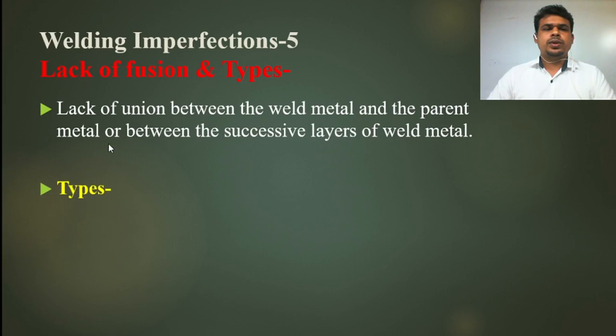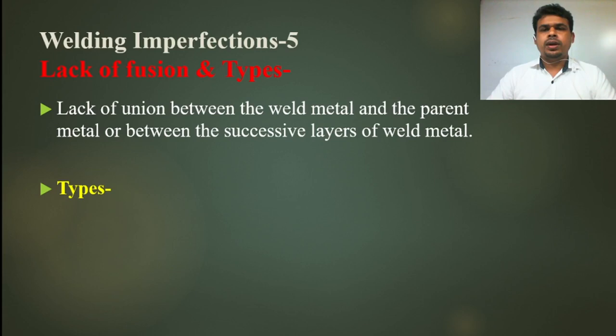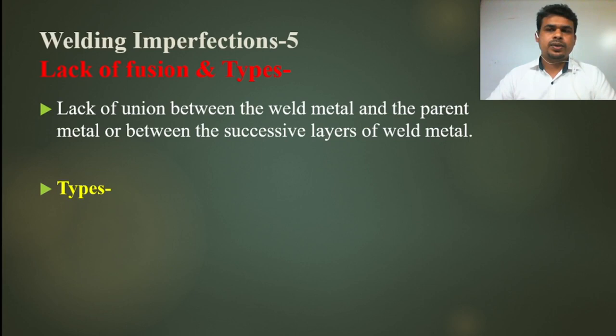So, welding imperfection — lack of fusion and their types. What is lack of fusion? It is the lack of union between the weld metal and the parent metal, or between successive layers of the weld metal. If the weld metal and parent metal do not connect or melt properly, that is called lack of fusion. In multi-run welding, if one pass does not melt properly with another, that is also lack of fusion.